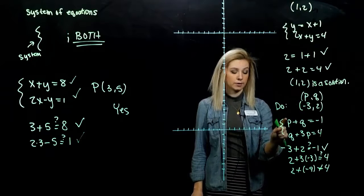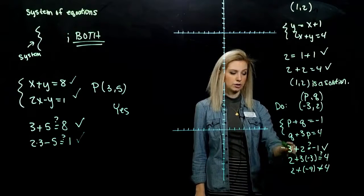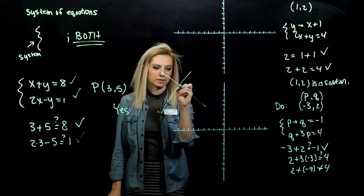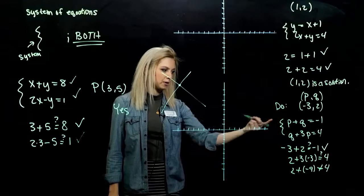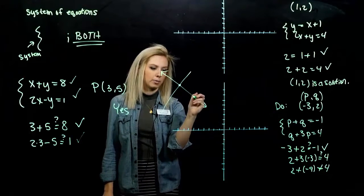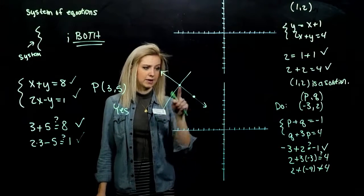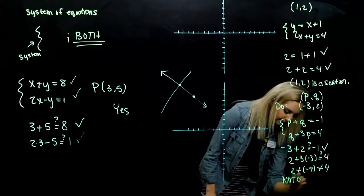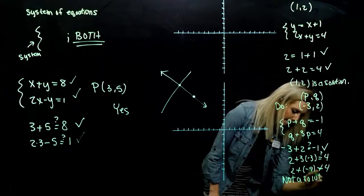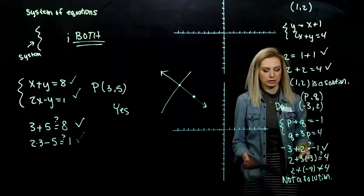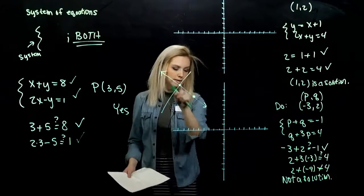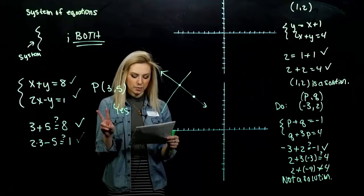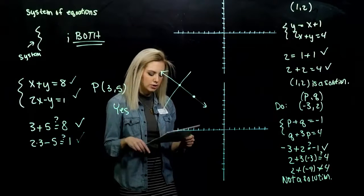So what does that tell me about this point? It's not a solution. It does lie on the first line because it did satisfy that equation, but it's not lying on the second. So if I have my two lines that are intersecting at this point, you know my first line, maybe it's this one, and that point is satisfied somewhere here, but it's not satisfying the second one because it's not touching that at all. So in this case, not a solution.